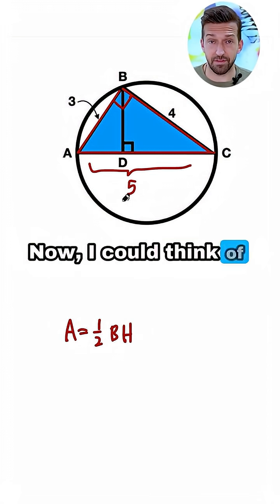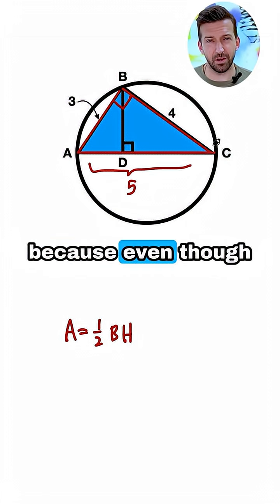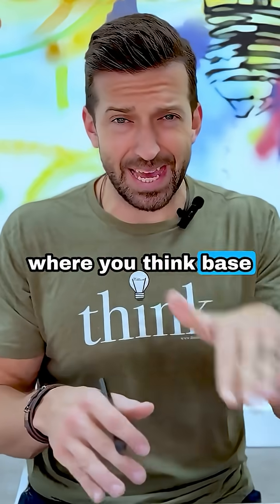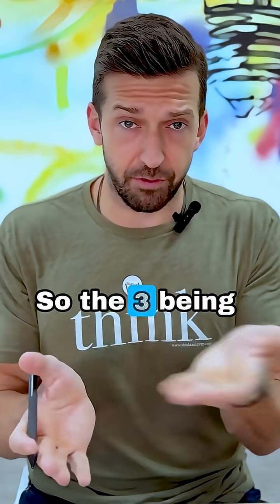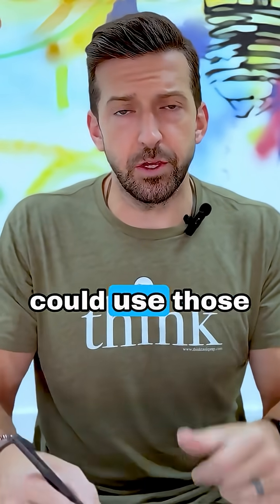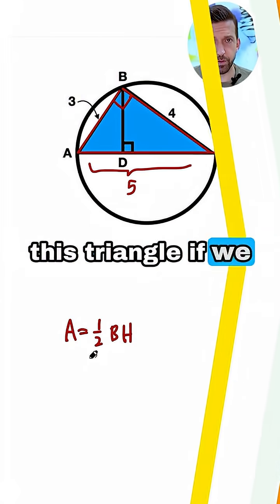The area formula for the triangle is area equals 1 half times base times height. I could think of the base and the height as being 3 and 4, because even though they're not pictured in a way where you think base and height, base and height are just perpendicular to each other, so the 3 being perpendicular to the 4, we could use those as the base and the height of this triangle if we rotate the picture.